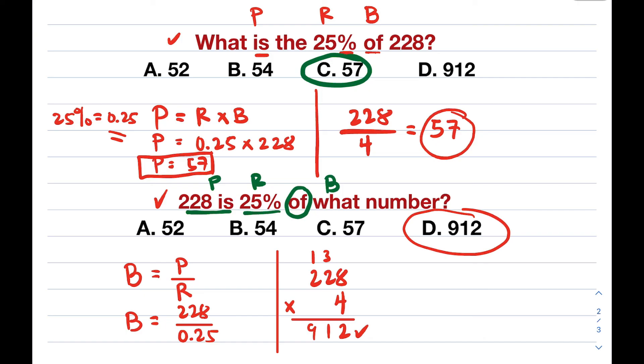But there's one more way. Because here, it's quite obvious that our answer is letter D. Sir, why? It says, guys, that 228 is 25% of what number? So we would expect that our answer should be greater than 228 because the number we're looking for is bigger. So among the choices 52, 54, 57, and 912, this is the only one greater than 228. That's why the answer is letter D.